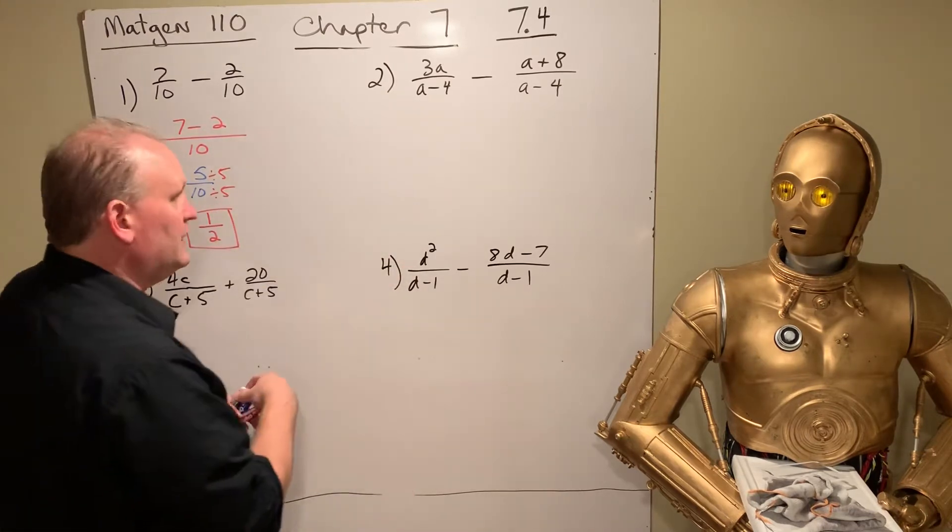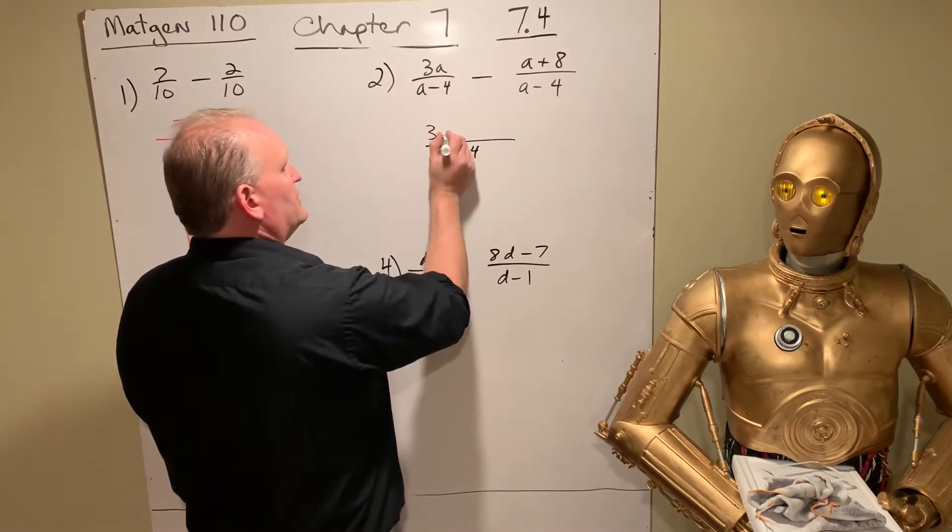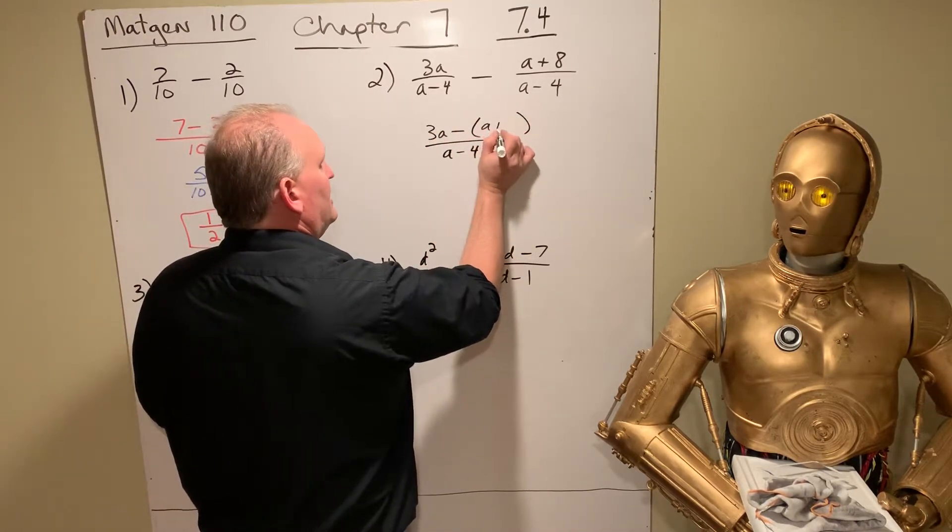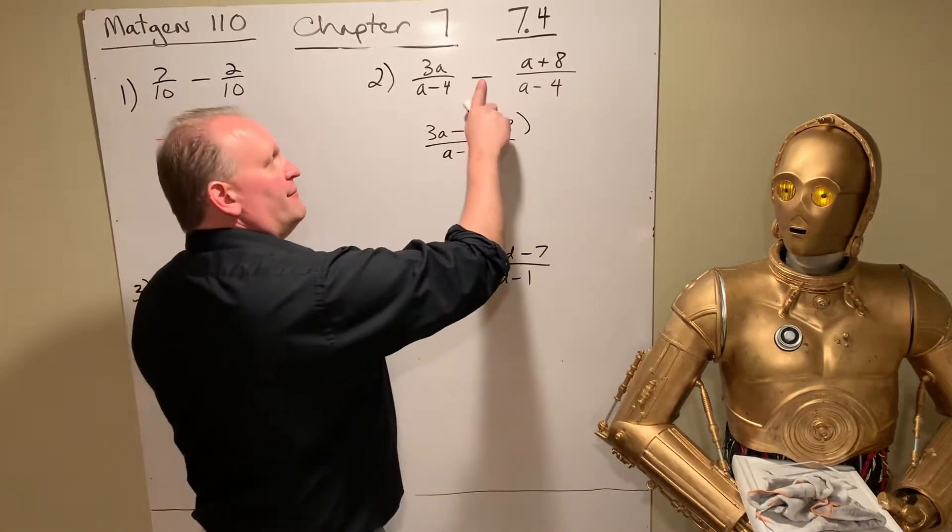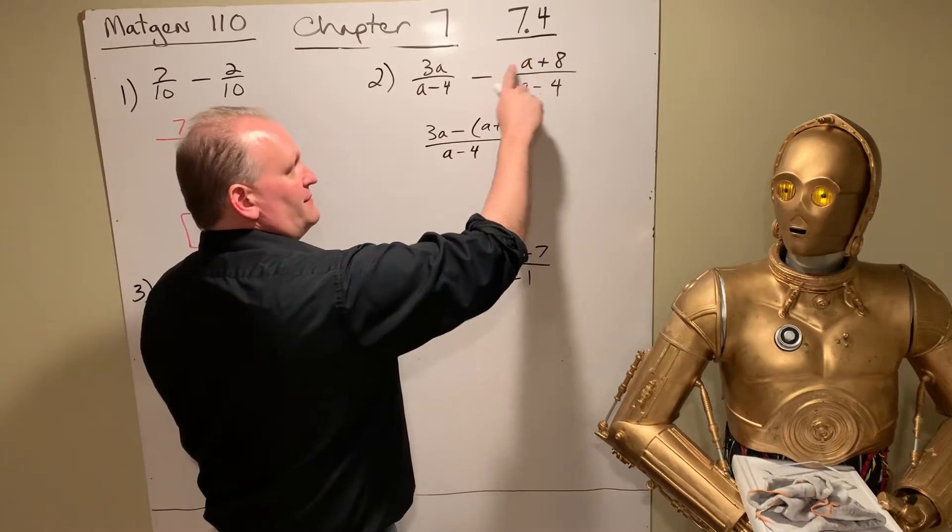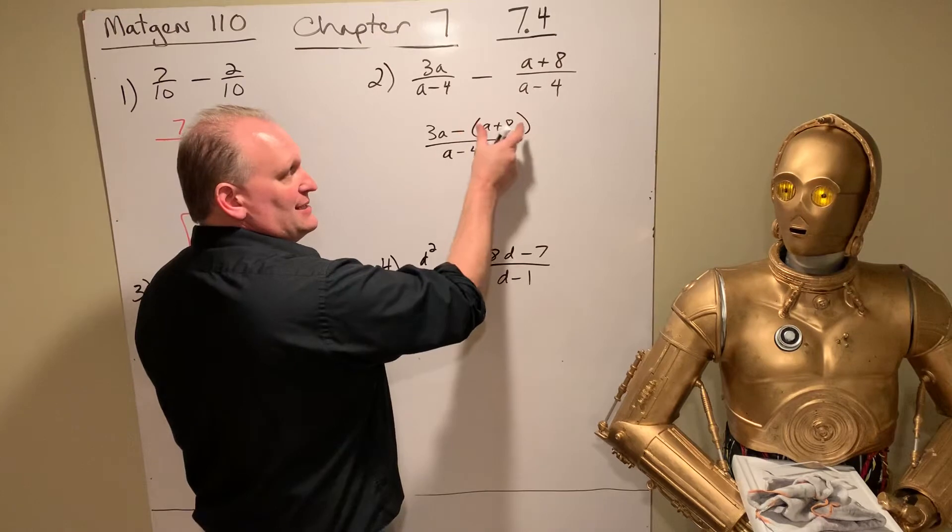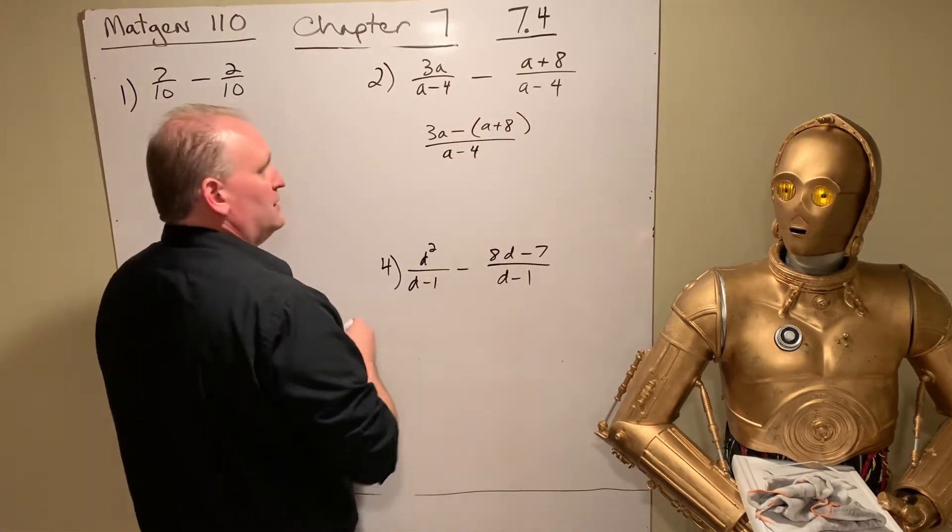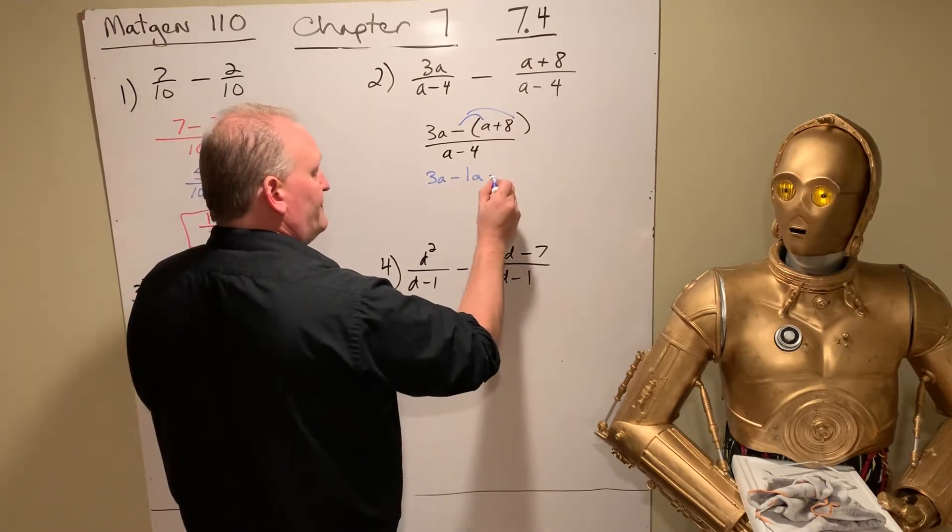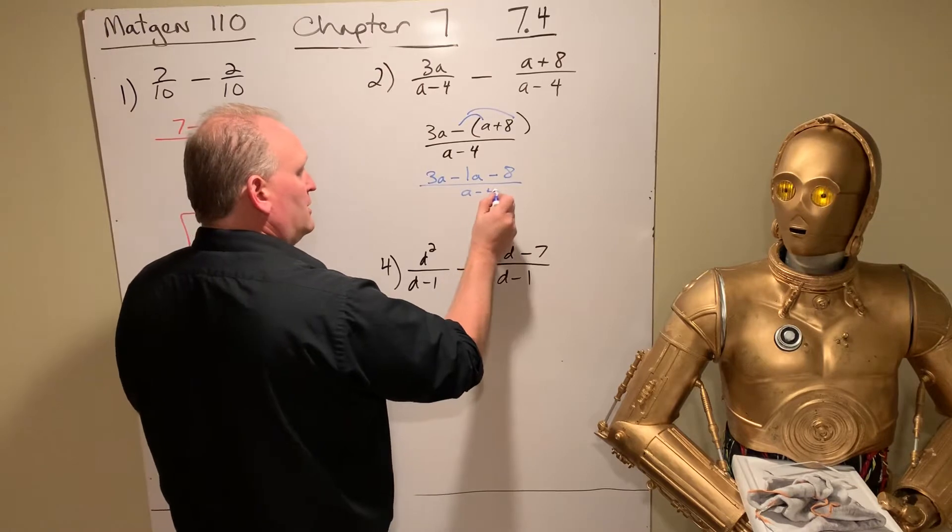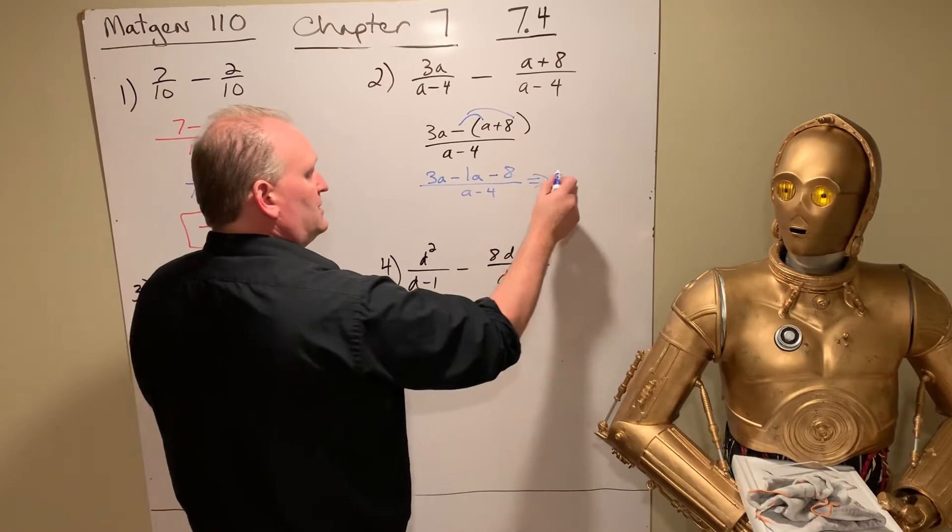Now let's do it with variables. We have a common denominator, a minus 4. This is 3a minus quantity a plus 8. This is tricky. Lots of people get this wrong. Be careful. The minus has to hit, basically it's a negative 1 times a and a negative 1 times 8. It's minus that whole thing. And so you do the distributive property. That's 3a minus 1a minus 8, all over a minus 4.